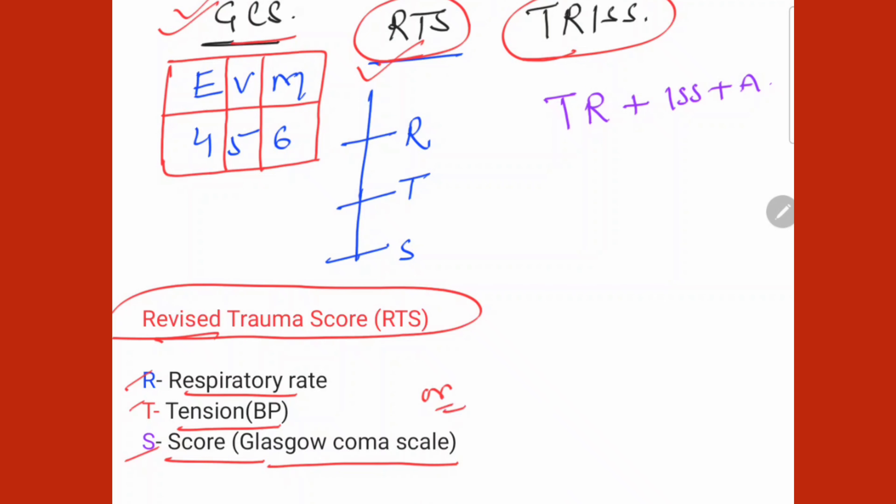It has two components. Basically, three systems are involved: CVS, CNS, and respiratory system. CVS means BP involvement. CNS means GCS involvement, that is Glasgow Coma Scale. And respiratory means respiratory rate.